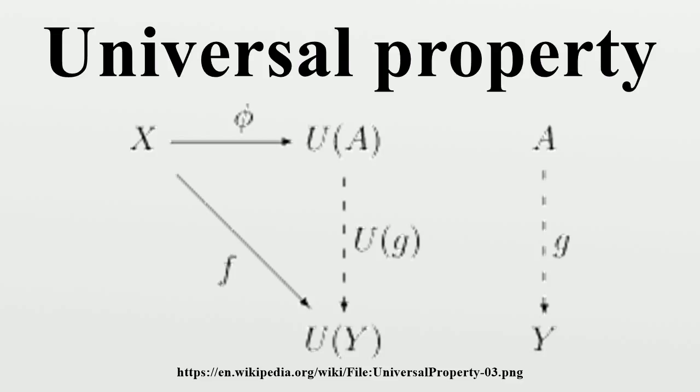Universal constructions are more general than adjoint functor pairs. A universal construction is like an optimization problem. It gives rise to an adjoint pair if and only if this problem has a solution for every object of C.